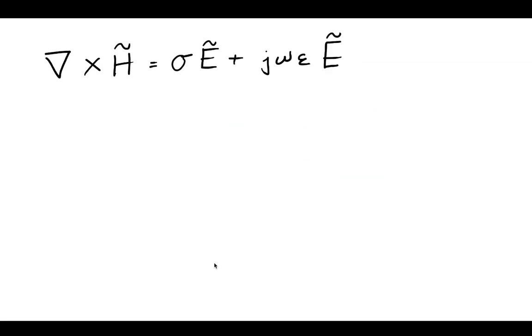Starting from there, we can see that we might be able to simplify this a bit more, and we can pull the electric field out on each side and create this coefficient that's sigma plus j omega epsilon.